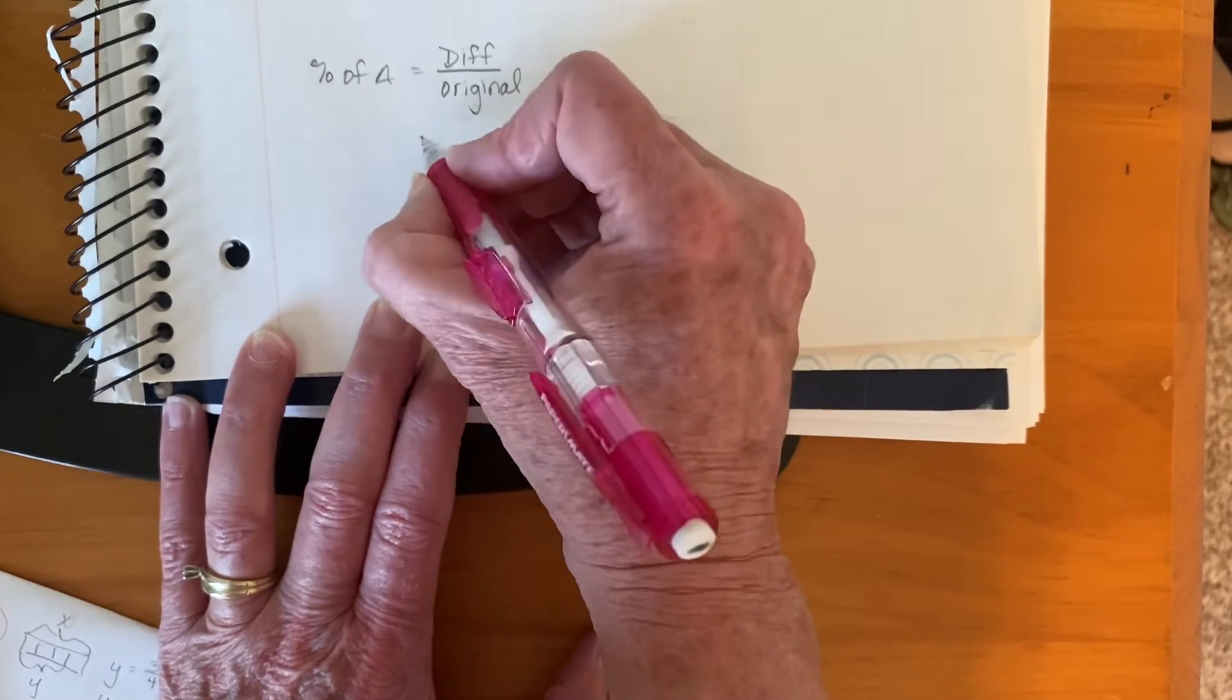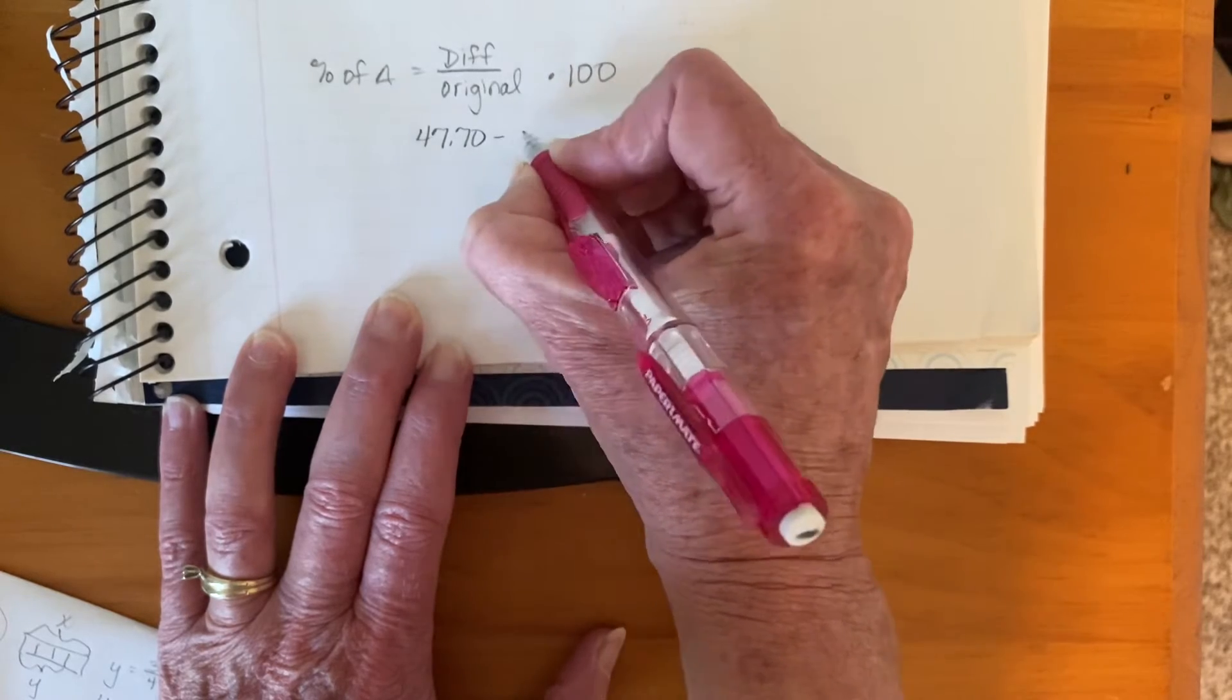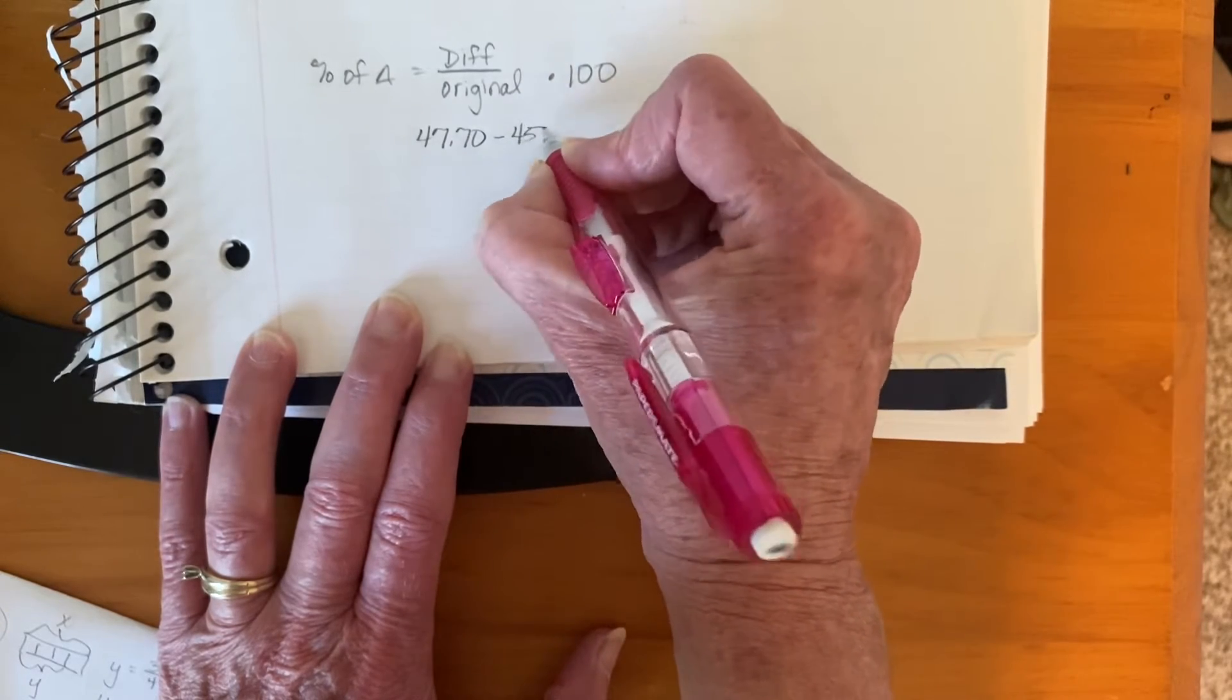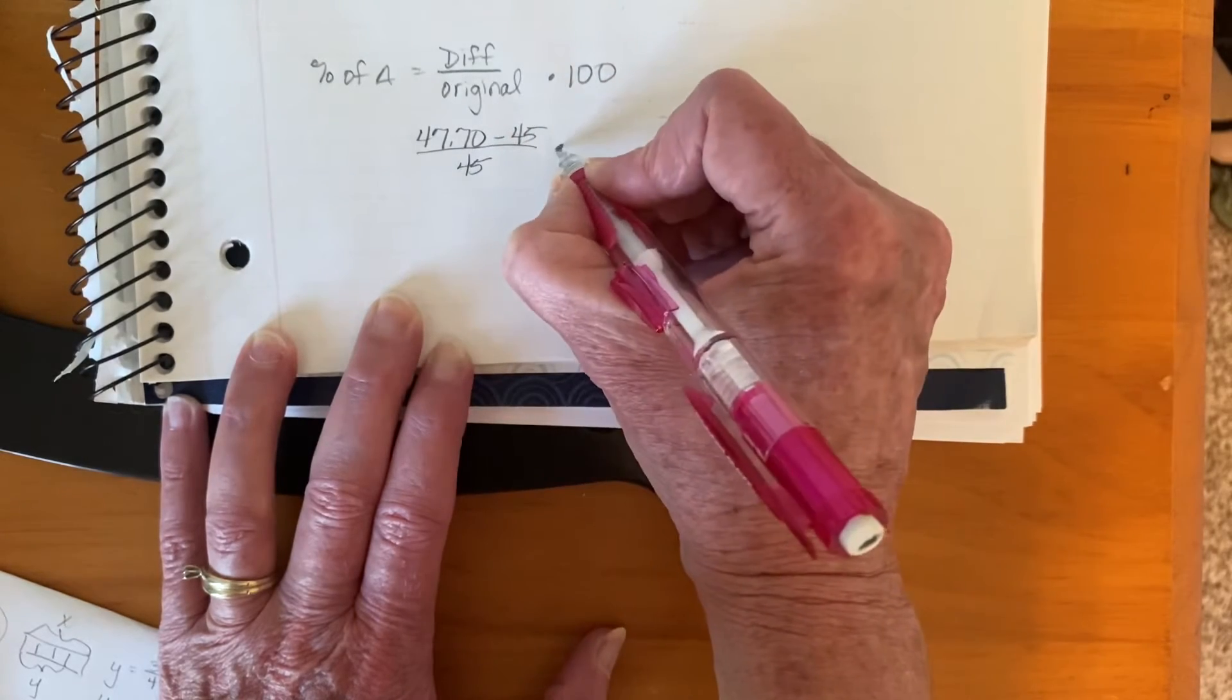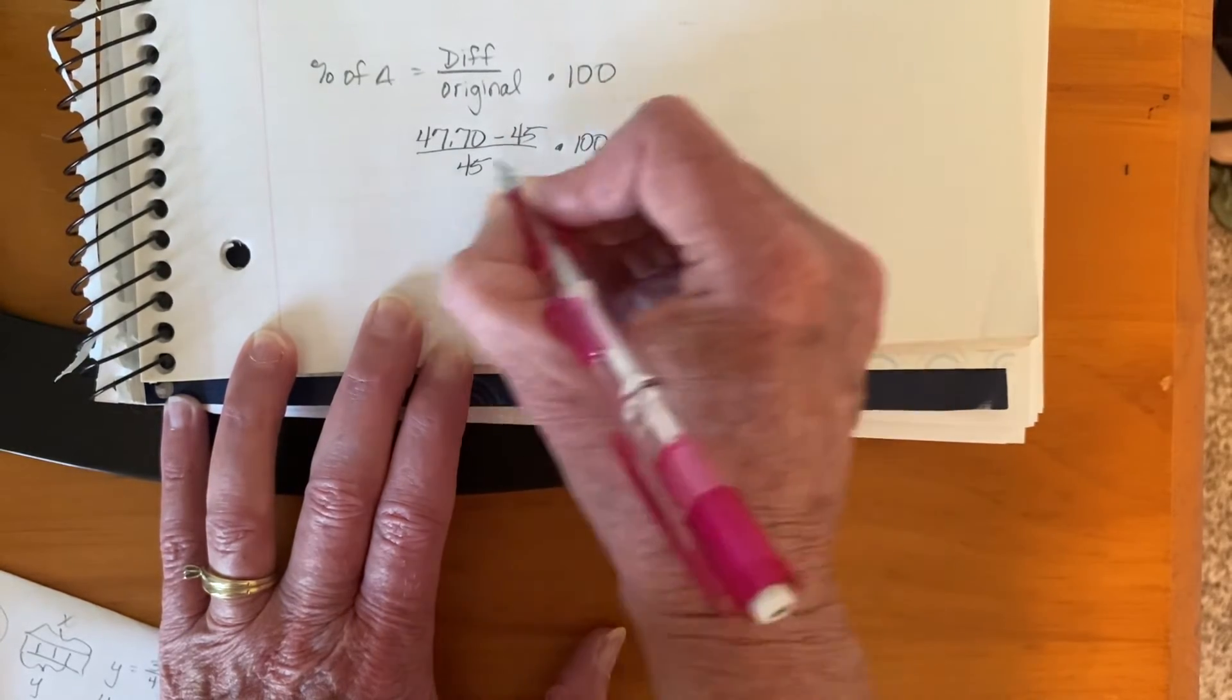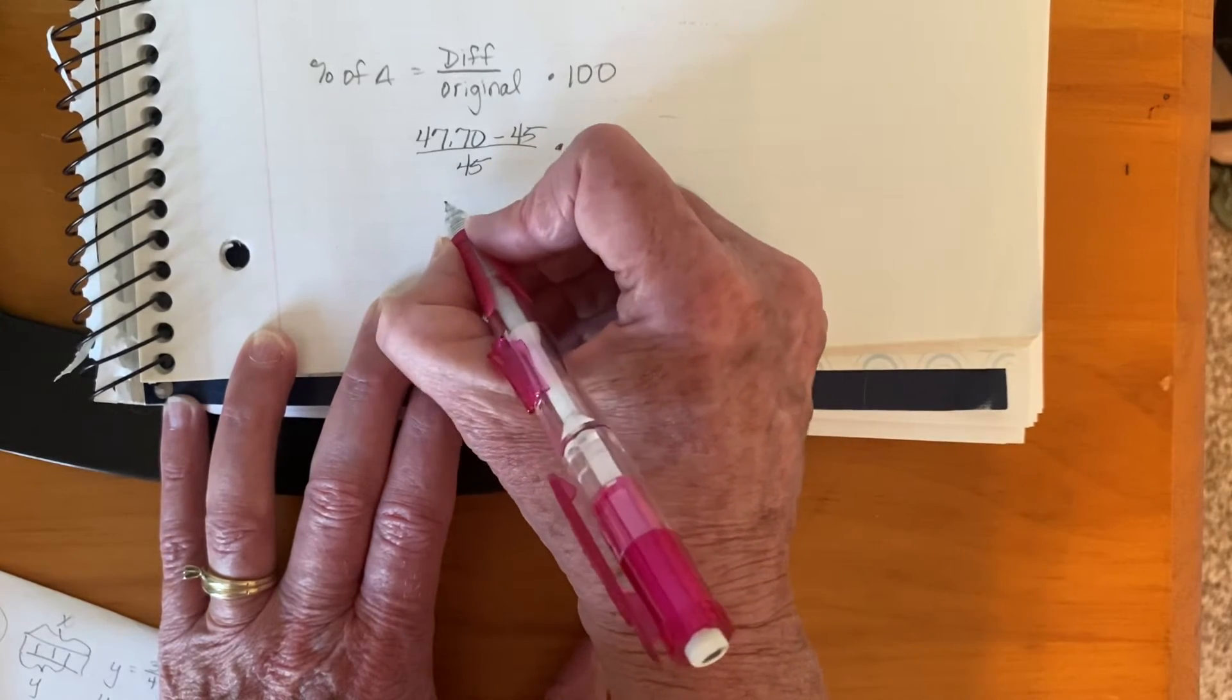So we have, he paid $47.70 and the price was $45 and the original price was $45. We're going to take all of that and multiply by 100. So when we subtract these two, we get $2.70.